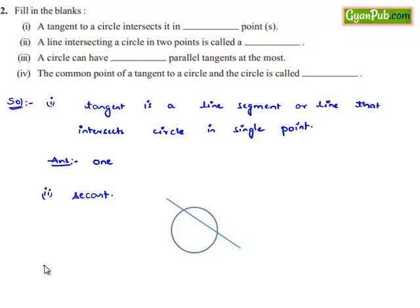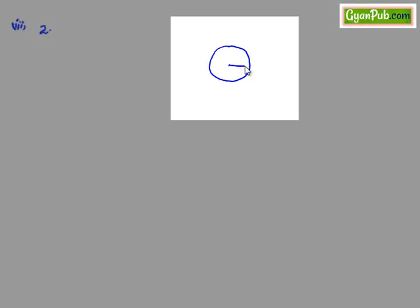Moving on to the third bit, a circle can have dash parallel tangents at most. The answer is 2, because if we consider a circle with radius r and draw a tangent passing through the point of contact P as shown in the figure.